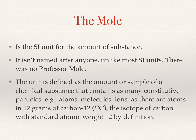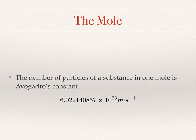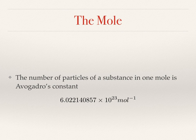One mole of something contains as many particles as there are atoms in 12 grams of carbon-12. Atoms are rather small, so you won't be surprised to hear there are rather a lot of them in 12 grams of carbon. In fact this is a really rather large number: 6.022140857 times 10 to the power of 23. This large number is called Avogadro's constant, quite often shortened to 6.02 × 10²³ — a very large number.